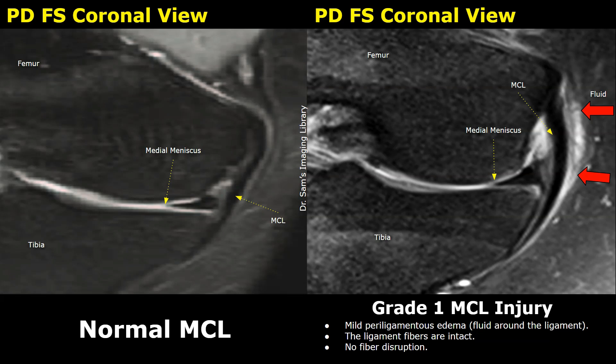Injuries to the MCL are common in sports such as football or skiing. We classify them into three grades. Grade 1 is a mild sprain — the ligament is stretched but still intact. Grade 2 is a partial tear, with more pain and some instability.